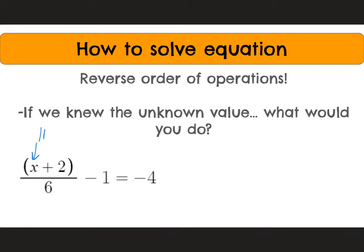If I told you x was 10, what would you do with 10? Well, you would say 10 plus 2, because it's in parentheses. Then you would divide that by 6. And lastly, you would subtract 1. However, we might not actually have a value of 10 here. We don't know what x is, so we need to go backwards. So we use the reverse order of operations.